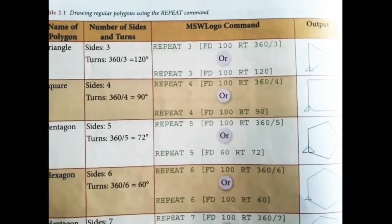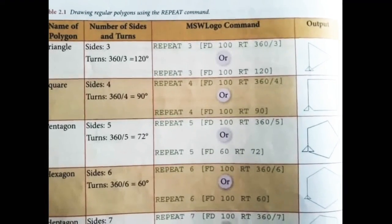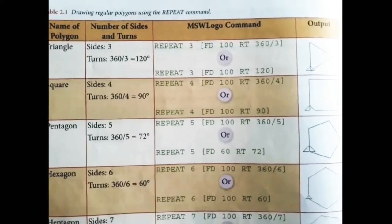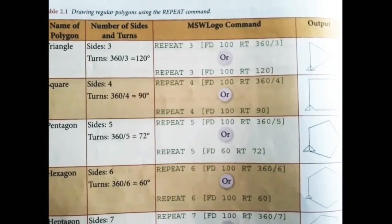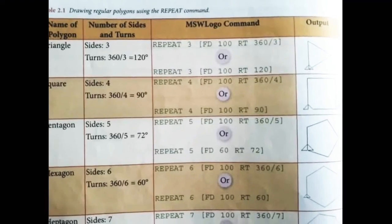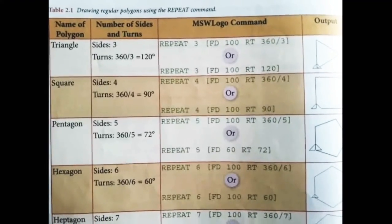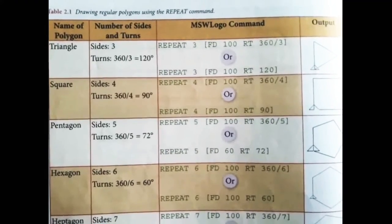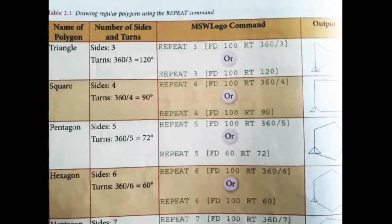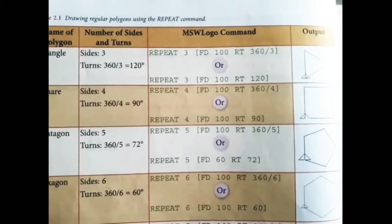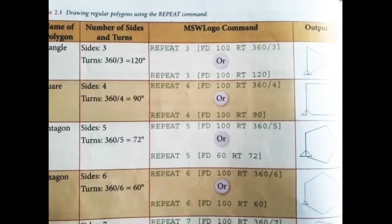For a pentagon, the number of sides is 5, and for a hexagon, the number of sides is 6. We will see this with a practical video.